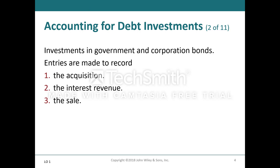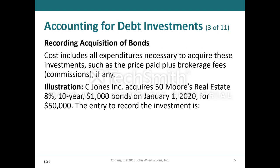So investments in government and corporation bonds — entries are made to record the acquisition, interest revenue, and the sale. Cost includes all expenditures necessary to acquire these investments, such as the price paid plus brokerage fees and commission fees.